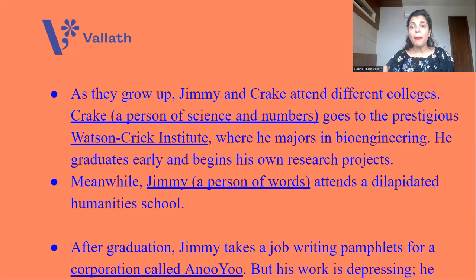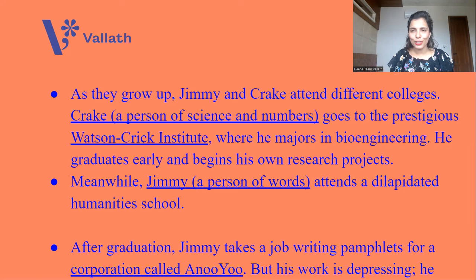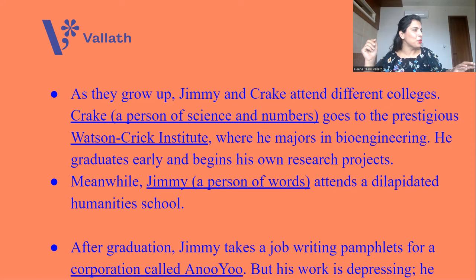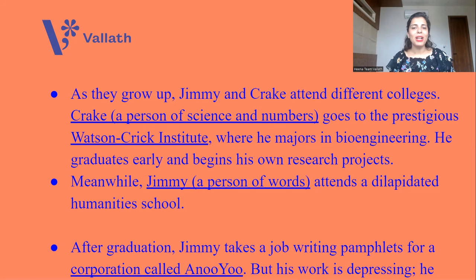As they grow up, Jimmy and Crake attend different colleges because their interests in life are different. Crake is a person of science and numbers, so he goes to the prestigious Watson Crick Institute where he majors in bioengineering. He graduates early and begins his own research projects. Whereas Jimmy, who is a person of words, attends a dilapidated, not-so-good humanities school. In this novel, when it comes to research, science has been given far more importance than humanities. Margaret Atwood, who loves art and is a person of words herself, wrote this novel to say we cannot diminish art from our lives — please do not give science so much importance.